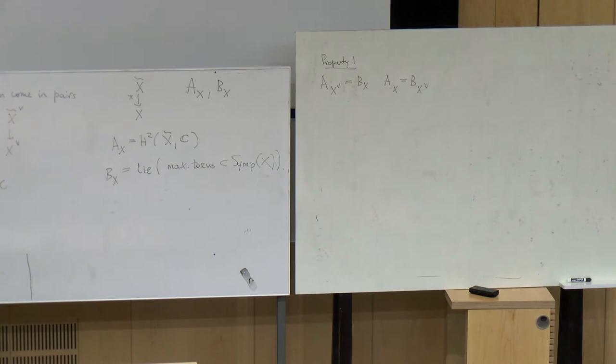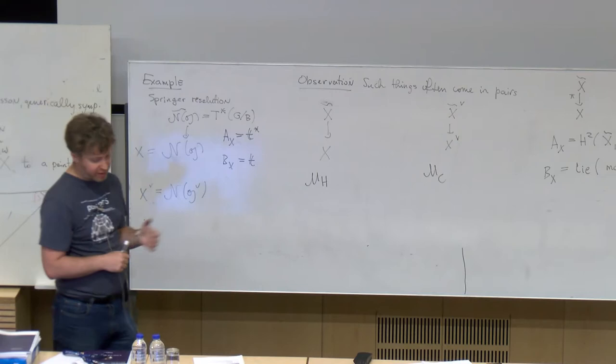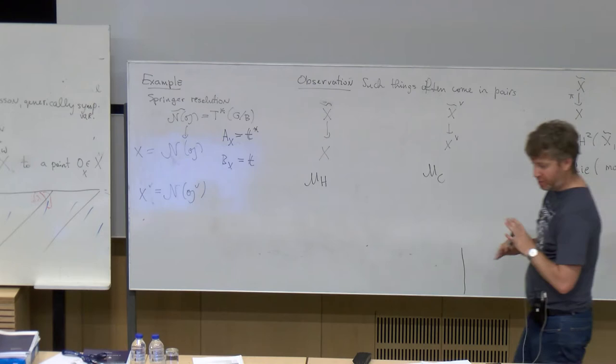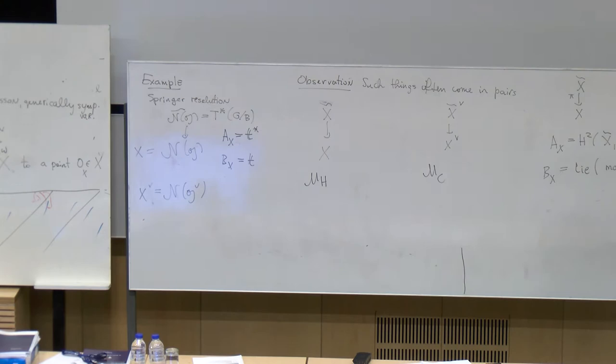For example, H^2 of the Springer resolution equals H^2 of the flag variety, so A(X) in this case is the dual space to the Cartan subalgebra. The group of symplectomorphisms in this case is just the original G, so B(X) is the Cartan subalgebra itself. Property one of symplectic duality: A(X-check) should equal B(X) and A(X) should equal B(X-check), so these two things should be interchanged.